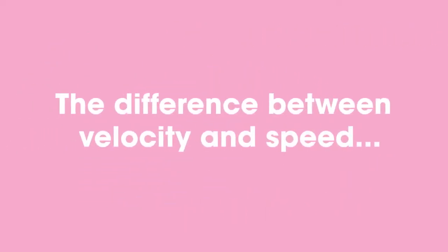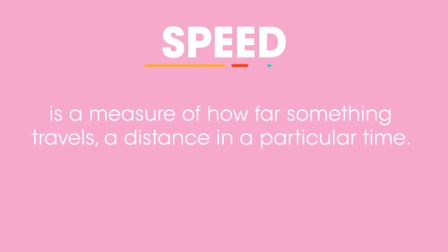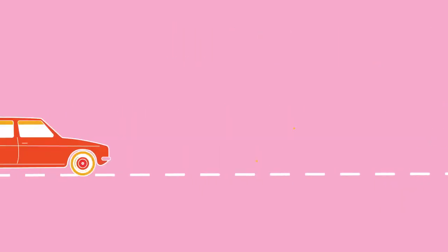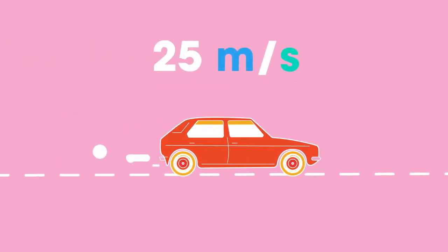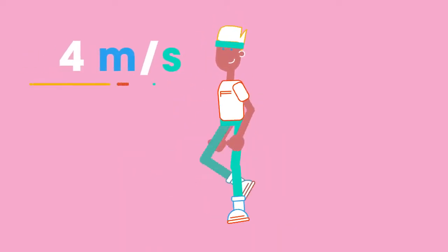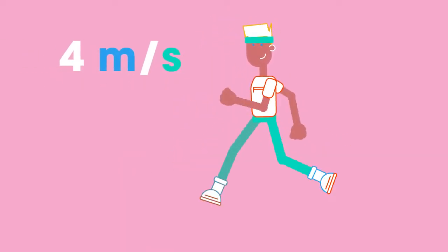First of all, what's the difference between velocity and speed? Speed is a measure of how far something travels a distance in a particular time. For example, a car travelling at 25 meters per second or a person jogging at 4 meters per second are both measures of speed.